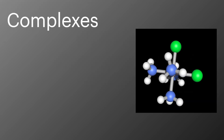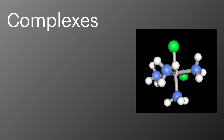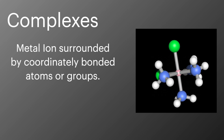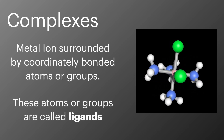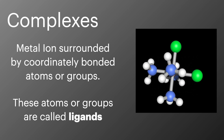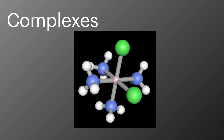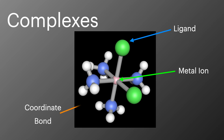So when we talk about a complex, what do we actually mean? A complex is a metal ion surrounded by coordinately bonded atoms or groups, and we call these atoms or groups ligands. Looking at this complex in more detail, we have a transition metal ion in the middle — this is where all the ligands coordinately bond to. We have ligands around the outside: a chlorine ligand at the top and four ammonia ligands also bonded in this complex. A coordinate bond joins each ligand to the metal ion.